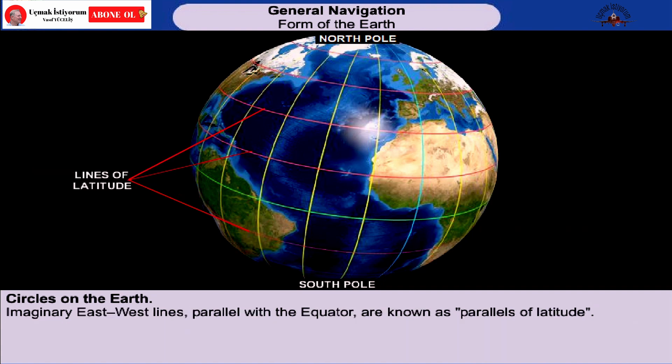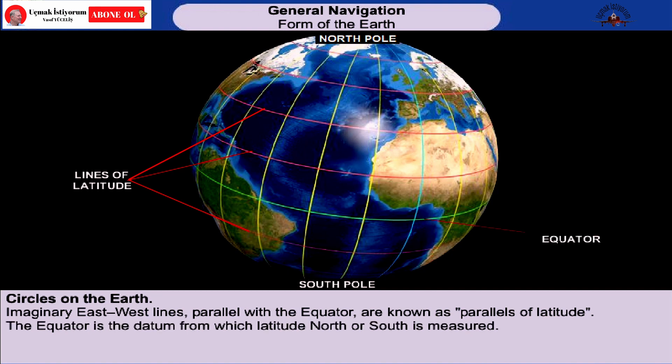The east-west lines are parallel with the equator and are known as parallels of latitude. The equator is the datum from which latitude north or south is measured.